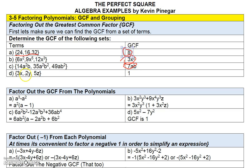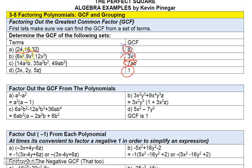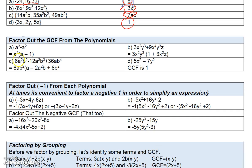If a set of terms doesn't have a shared common factor, that's a bit of a misnomer — if you can't find a number that divides into all the terms, the greatest common factor is simply 1. Any set of terms has at least a greatest common factor of 1.